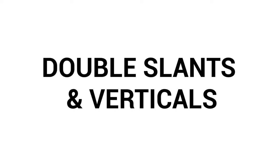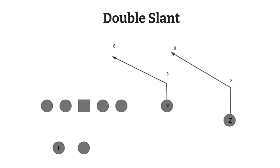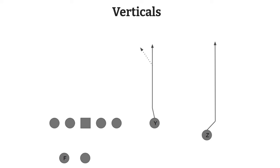We're going to start simple with two of the most common ones: double slant and verticals. Both are run in sets with two receivers on a side — two by one, two by two, or three by two. With double slants, both wide receivers run a slant. With verticals, both receivers run a seam route, a go route — straight down the field. It's as self-explanatory as the names suggest.